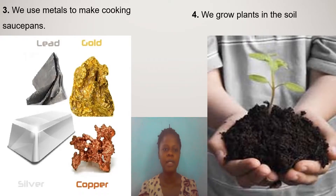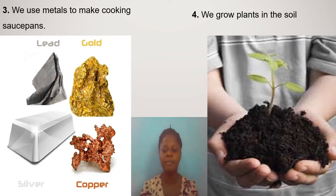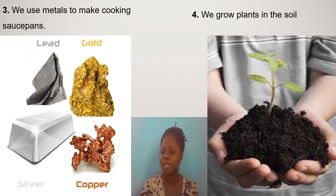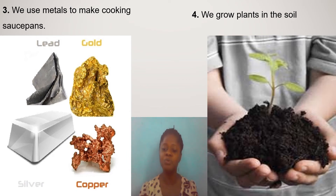Our third material is metals. Metals come in different shapes, sizes, and colors — there are different types of metal. They can be used in making cooking utensils, spoons, cups, and roofing sheets.